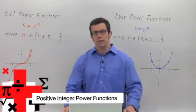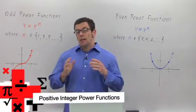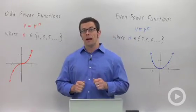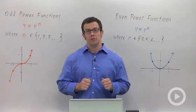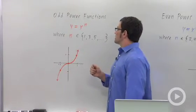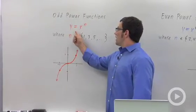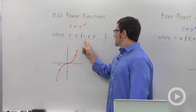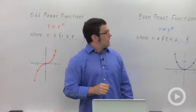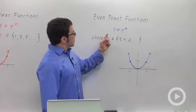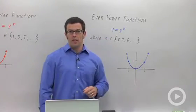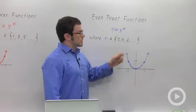I want to talk about power functions, specifically power functions where the exponent is a positive integer. We can divide these into two cases. First, the odd power functions, which are y equals x to the n, where n is an odd number: 1, 3, 5, etc. And then there are the even power functions, where y equals x to the n and n is an even number: 2, 4, 6, etc.